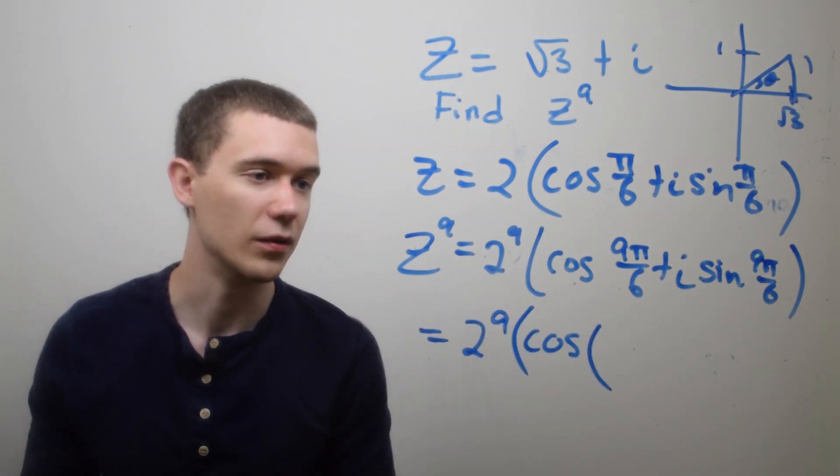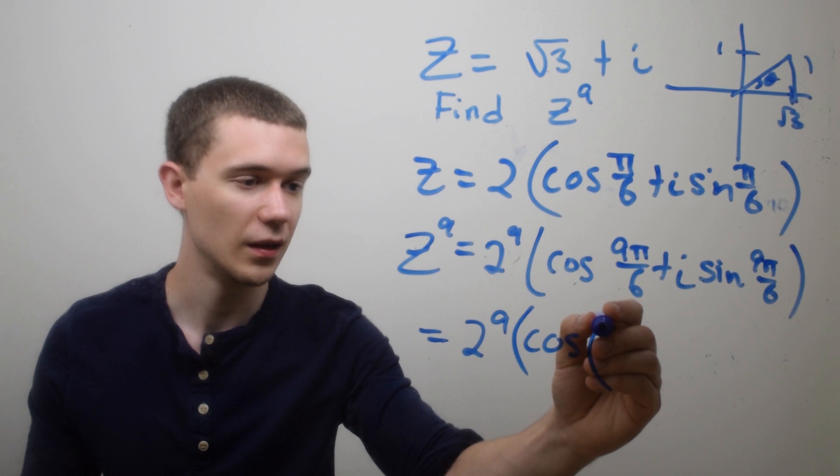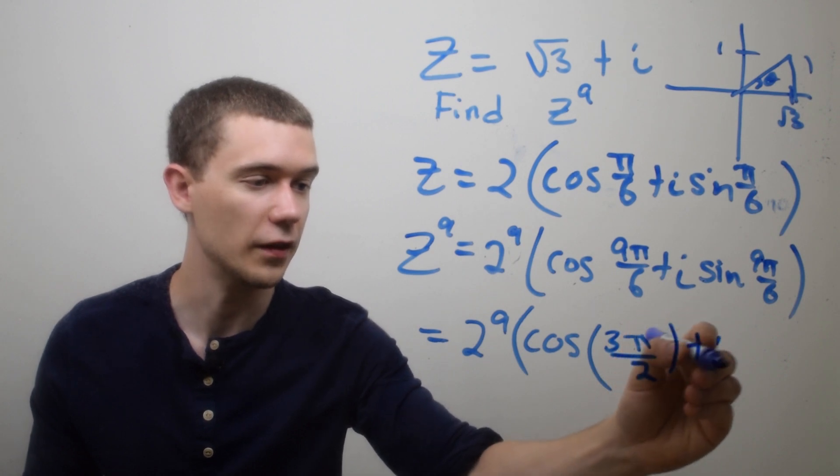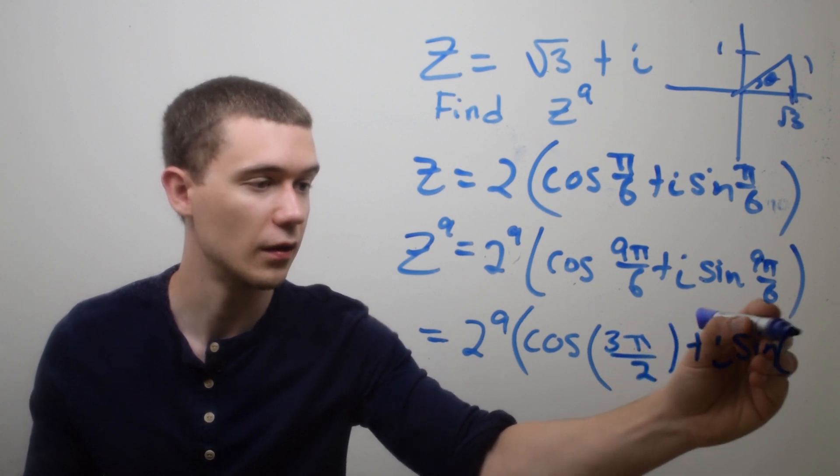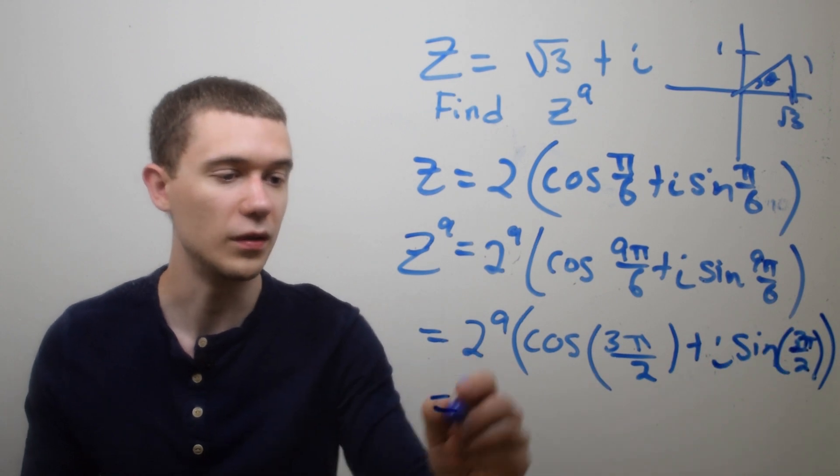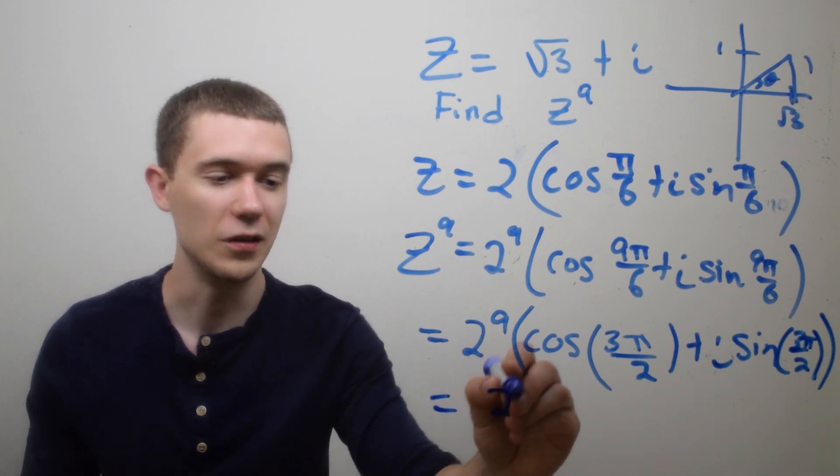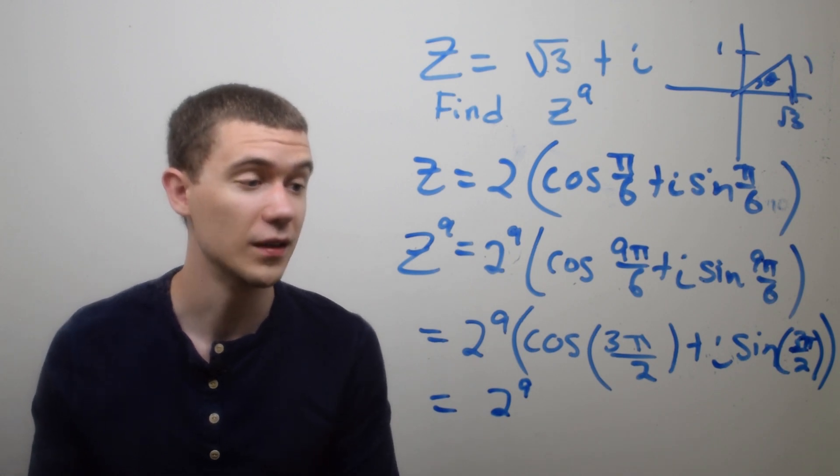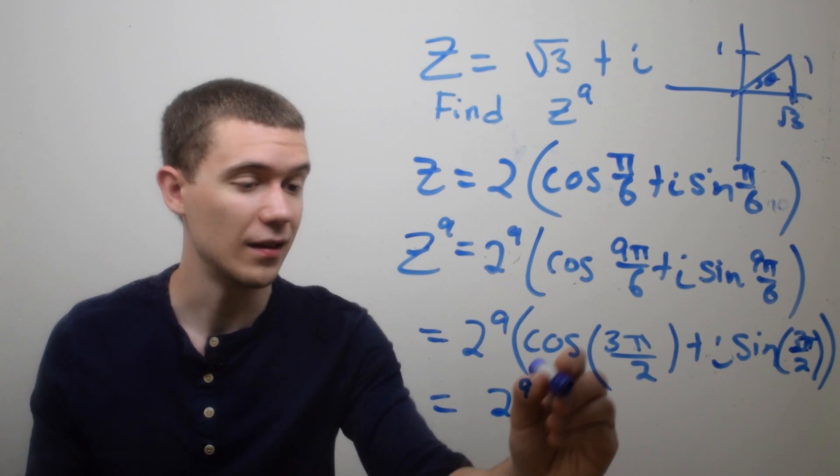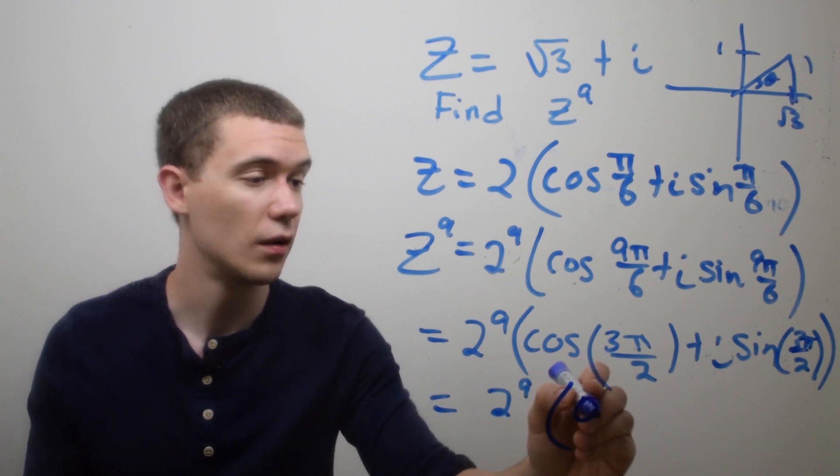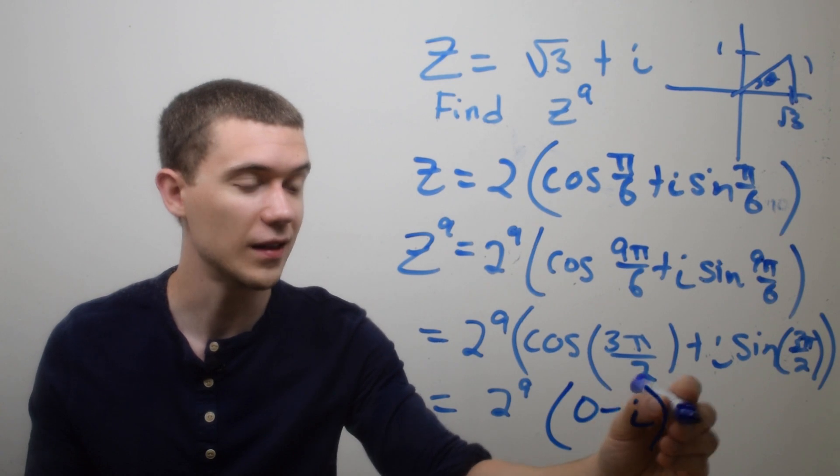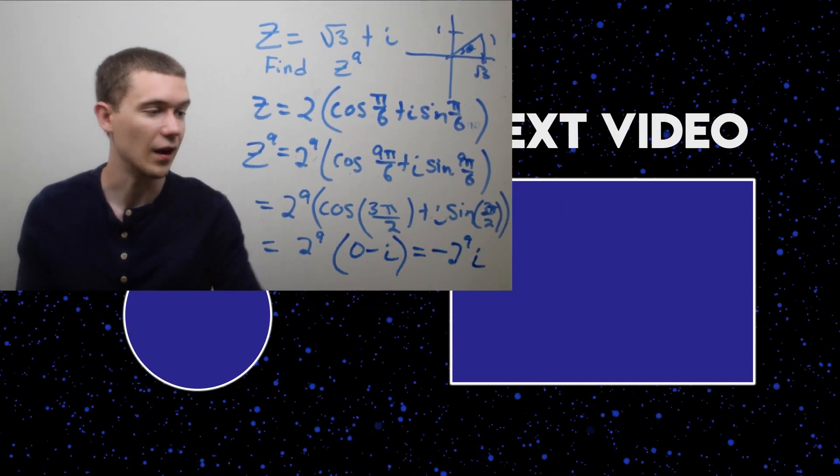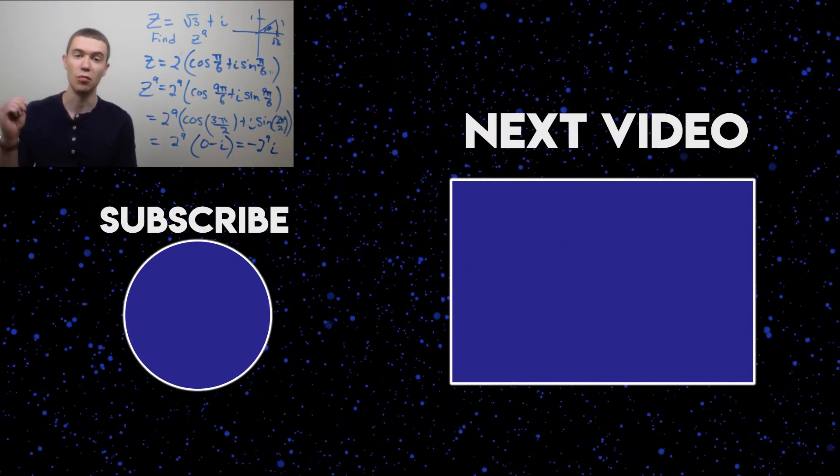Well, I believe 9π/6 is going to give me, let's see, I think that's going to be 3π/2, if I divide the numerator and the denominator by three. And you're more than welcome to compute this if you like. So I'm not going to do 2^9, you can check whatever that is with your calculator. But cos(3π/2) is zero, and sin(3π/2) is negative one. So this is just really -i. And so our answer is -2^9 i. That will be our number raised to the ninth power.